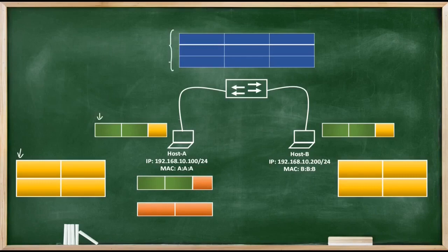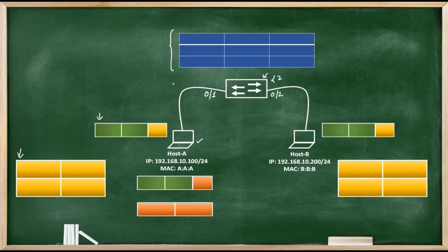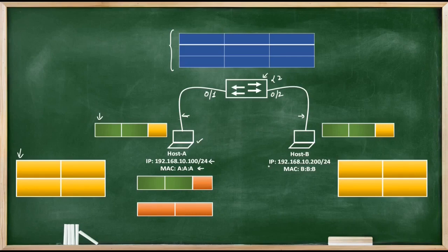Consider this diagram. Please ignore the empty boxes and tables for now because we will be filling them during this video. Here we have a single layer 2 switch connected to two hosts. Host A is connected to port 0/1 and Host B is connected to port 0/2. The IP address of Host A is 192.168.10.100/24 and its MAC address is A:A:A. Similarly, the IP address of Host B is 192.168.10.200/24 and its MAC address is B:B:B.